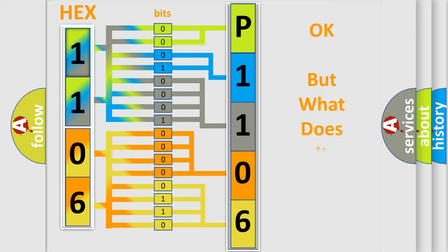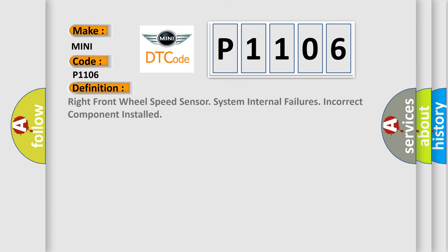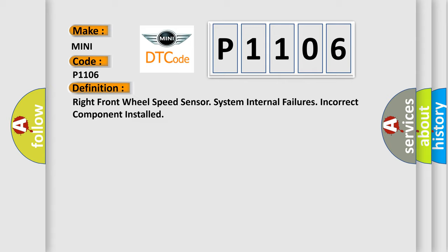The number itself does not make sense to us if we cannot assign information about what it actually expresses. So, what does the diagnostic trouble code P1106 interpret specifically for MINI car manufacturers? The basic definition is: right front wheel speed sensor system — internal failures, incorrect component installed.